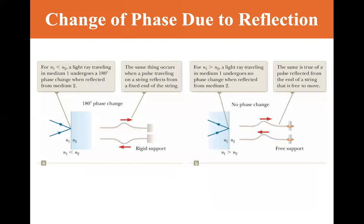For N2 greater than N1, it's similar to a wave on a string hitting a rigid support. For N1 less than N2, a light ray traveling in medium one undergoes 180 degree phase change when reflected from medium two. The same occurs when a pulse traveling on a string reflects from a fixed end of the string.